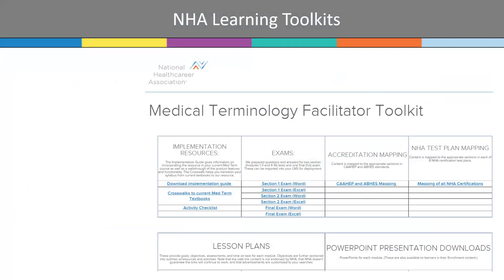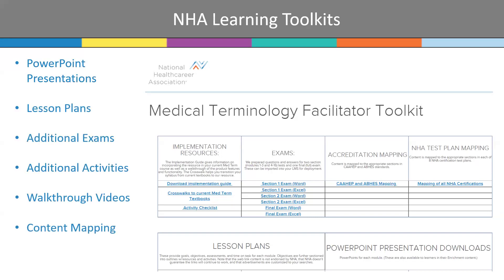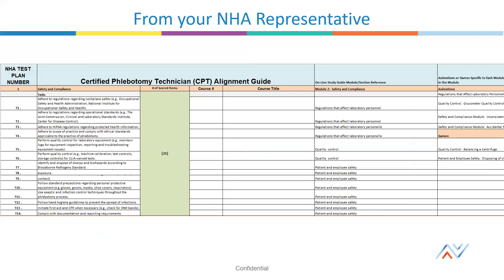Specifically for all of NHA's core learning resources and some exam materials, we also provide implementation toolkits that can include downloadable and editable PowerPoint presentations aligned to the core learning, optional lesson plans outlining the core content and suggestions for implementation, optional testing banks and resources to implement, additional activities to help scrub and polish the learning, walkthrough videos unique to the product content, and mapping resources to accreditation textbooks and test plans. We also have mapping resources for our exam preparation resources called alignment guides, which you can request from your NHA representative.